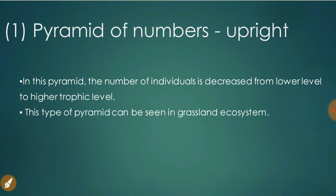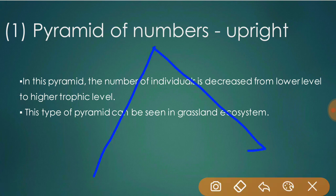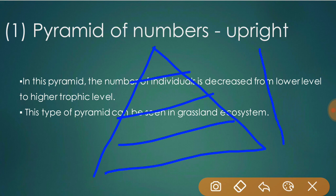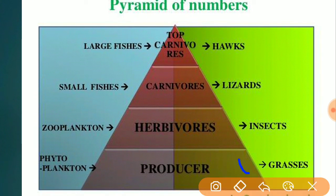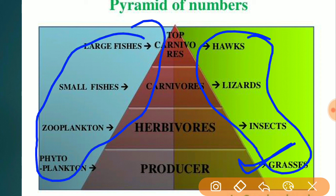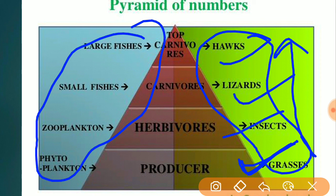In the upright pyramid of numbers, the number of individuals decreases from lower to higher trophic levels. This type of pyramid is seen in grassland and aquatic ecosystems. For example: in a terrestrial ecosystem, grasses are at the base in large amounts, decreasing upward through insects, lizards, and hawks. In an aquatic ecosystem: phytoplankton are eaten by zooplankton, which are eaten by small fishes, which are eaten by large fishes.